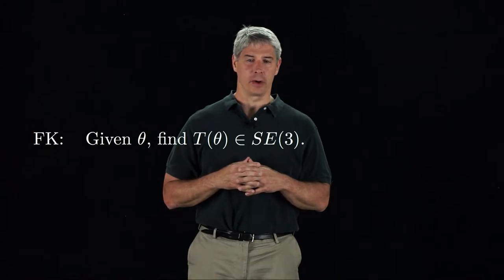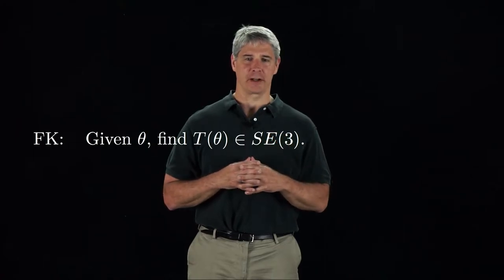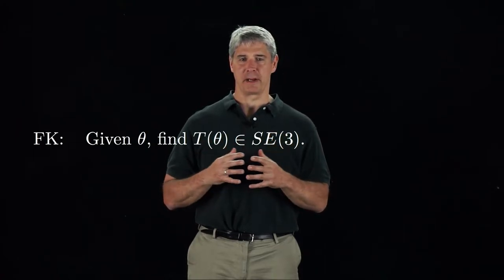In Chapter 4, we study the forward kinematics of open chains. Given the joint configuration theta, find the configuration of the end effector frame B relative to the space frame S.